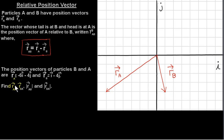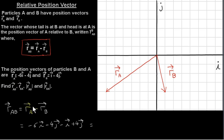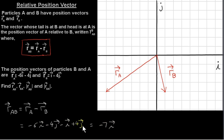We want to find vector RAB. So we take vector RA, which is minus 6I minus 4J, and subtract vector RB. So we get minus 6I minus 4J minus 1I plus 4J. Minus 6I minus 1I gives minus 7I, and minus 4J plus 4J gives 0J.